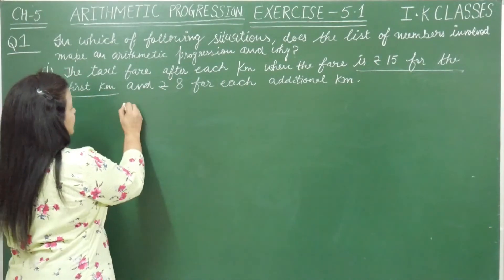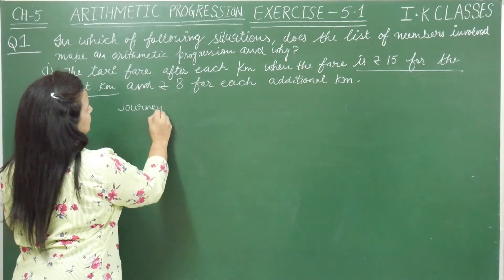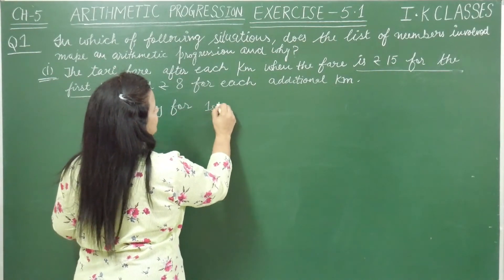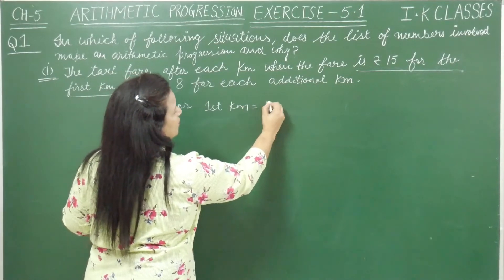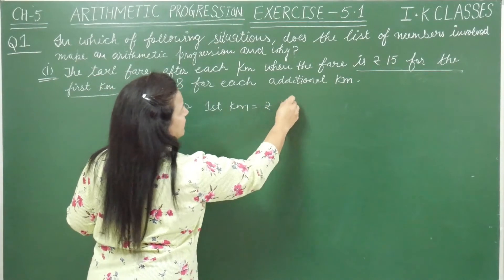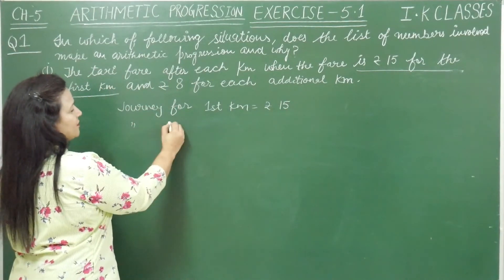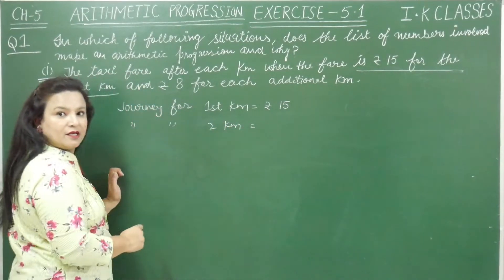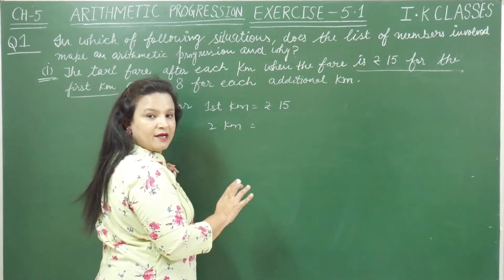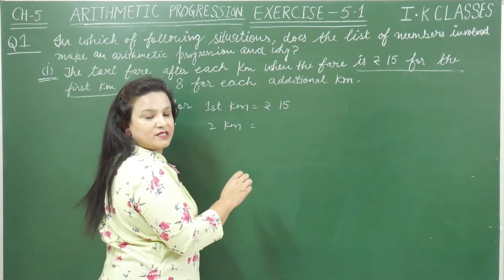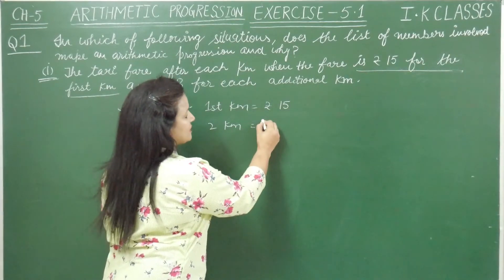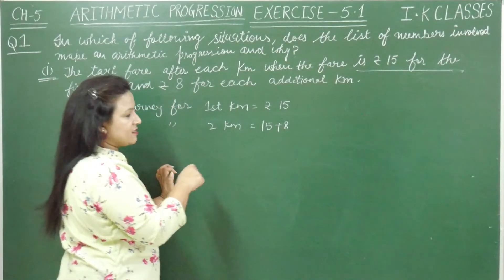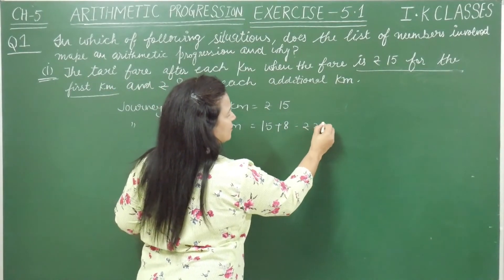Journey for 1 kilometer — that is rupees 15. And journey for 2 kilometers: the first kilometer is rupees 15, then 1 kilometer remaining, and 1 kilometer charges are rupees 8. So we add rupees 8, making the journey for 2 kilometers rupees 23.